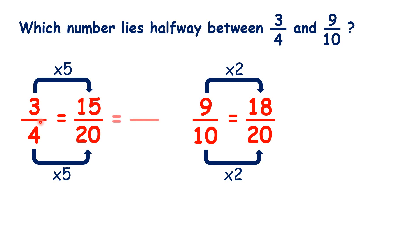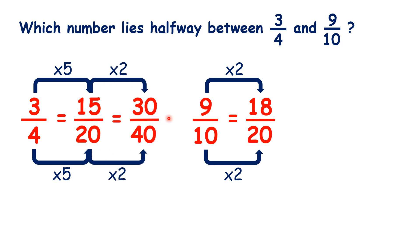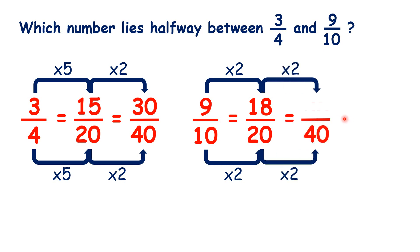We can write 3 quarters as 30 fortieths, and 9 tenths as 36 fortieths. Because the number halfway between 30 and 36 is 33, our answer is 33 fortieths.